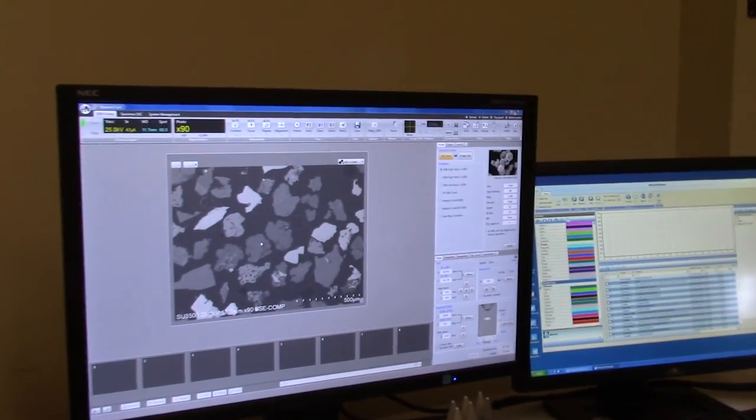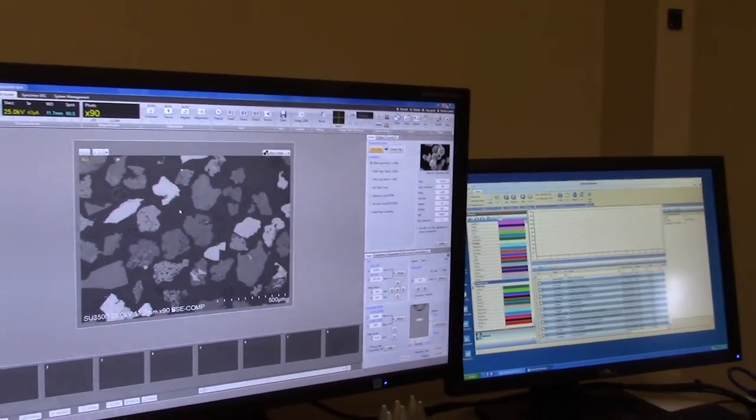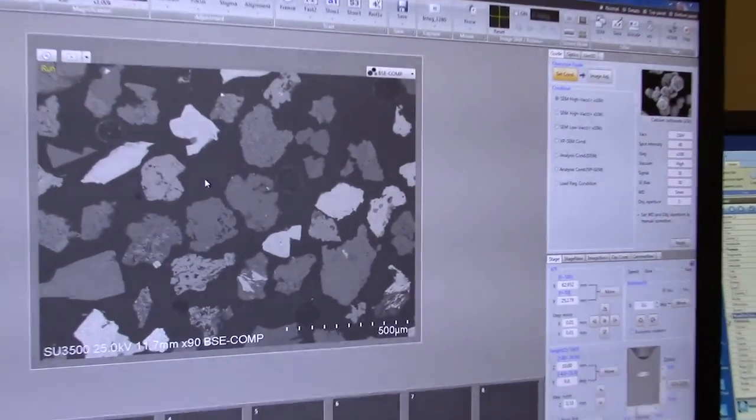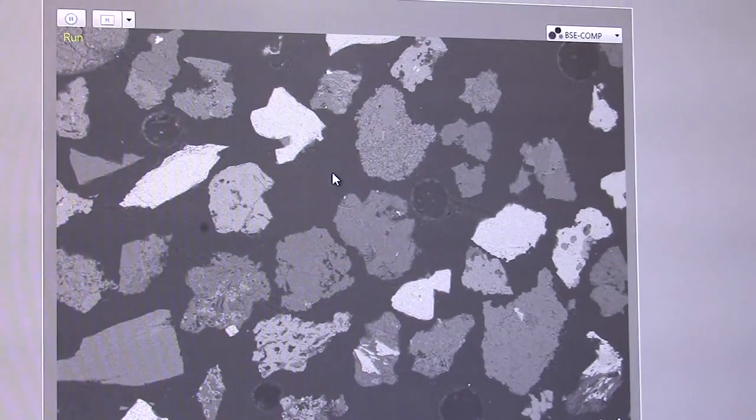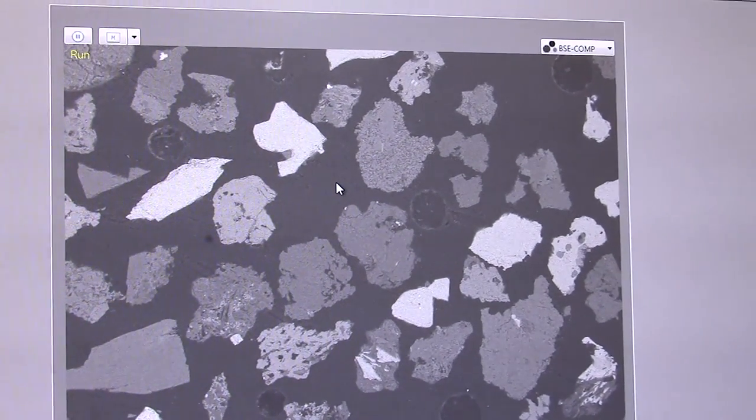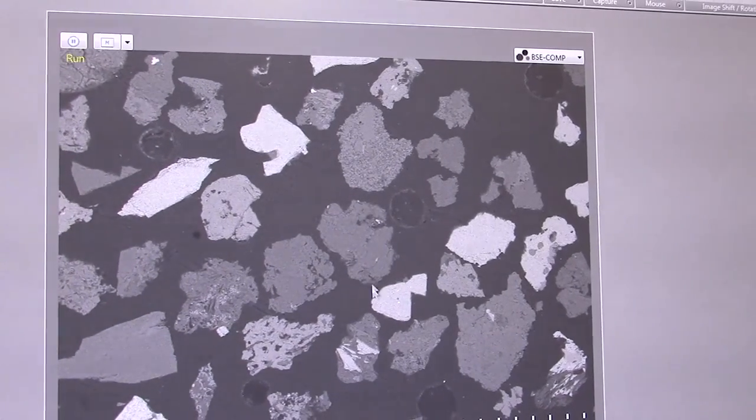What we have is something called a backscatter image. Everything is black right here because it's carbon coated, and you need carbon in order to run the SEM with these high voltages and high vacuums. The rule of thumb is black is carbon.